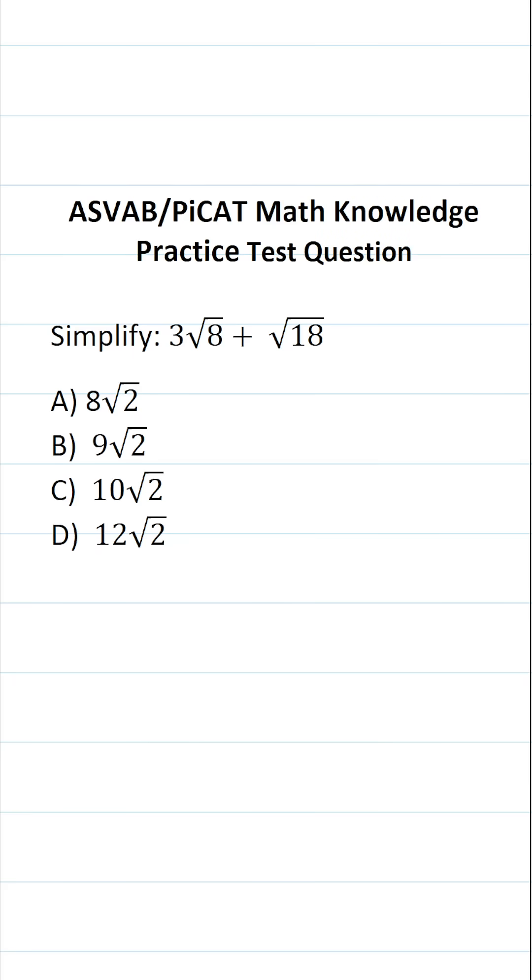This math knowledge practice test question for the ASVAB and PiCAT says simplify 3√8 + √18. In other words, we're being asked to add these two radicals together.